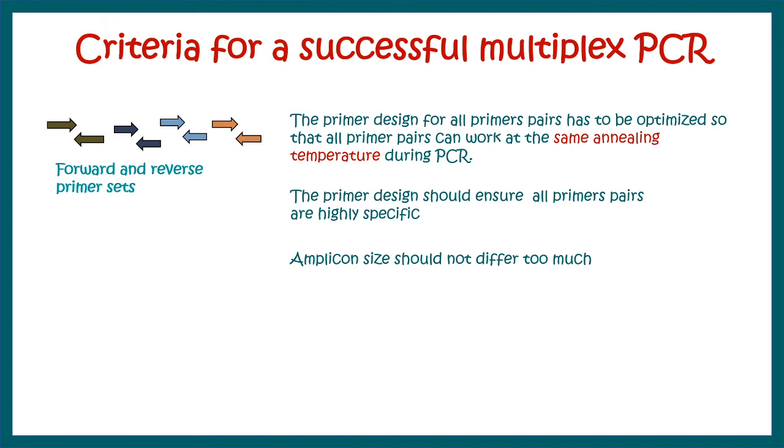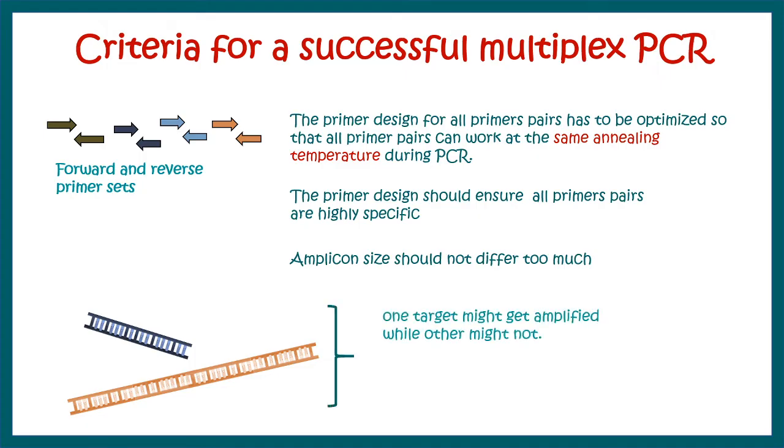The amplicon size should not differ too much. If you have a big amplicon versus a small amplicon, then the polymerization time has to be optimized so that both targets can be amplified, not only one and not the other. These are the criteria we need to understand while setting up multiplex PCR.